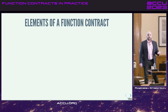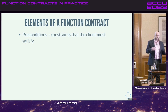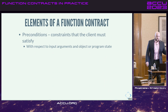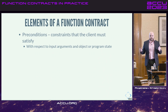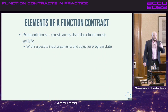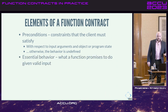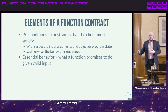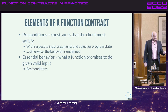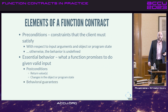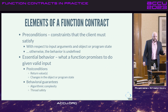What are the elements of a function contract? First, preconditions — the constraints that the caller of the function must satisfy to call the function correctly. Those constraints might be on the input arguments, or program state, or if it's a member function, on the object state. If those constraints are not satisfied, the behavior of that function is undefined. Then there is essential behavior — what the function author promises to do when you call the function in contract. It includes postconditions, return values, changes in program or object state, and behavioral guarantees like algorithmic complexity, thread safety, and so on.